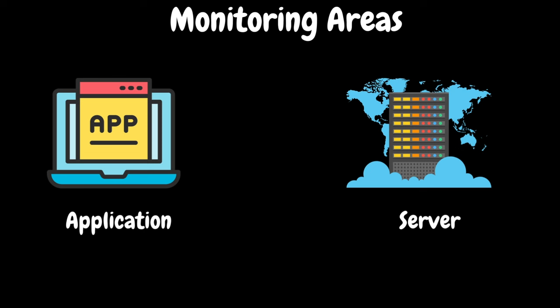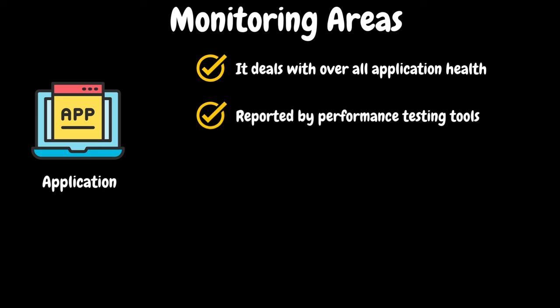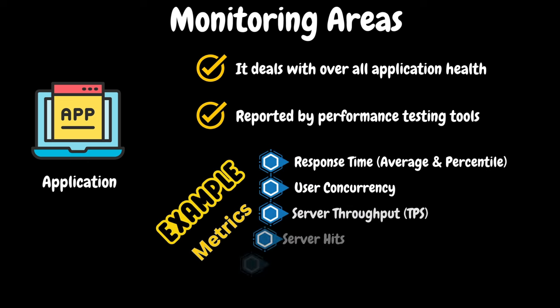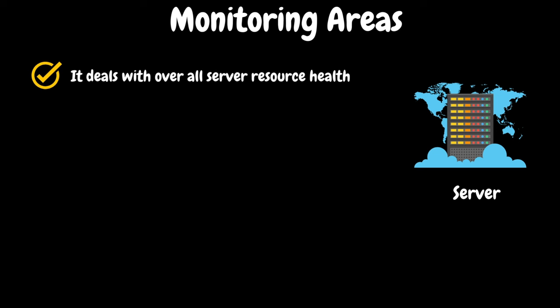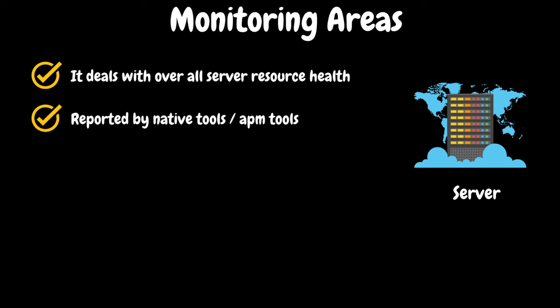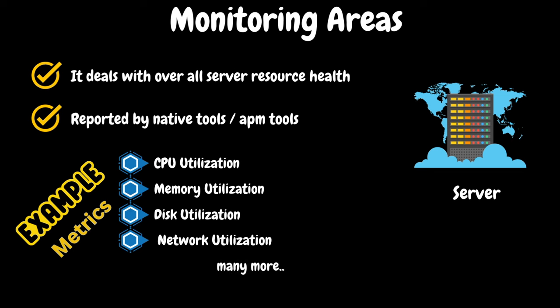From a performance testing standpoint, in the monitoring domain, we have two areas: application monitoring and server monitoring. We need to identify bottlenecks. Application monitoring covers metrics like concurrency, response load, server throughput measured in TPS, successful server hits, HTTP errors, and many more. Server monitoring covers the overall server resource health — server metrics using native tools like Perfmon for Windows, and top, iostat, vmstat, and sar for Unix-like systems. Key server metrics include CPU utilization, memory utilization, disk utilization, and network utilization.